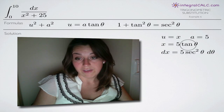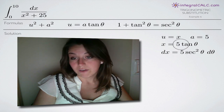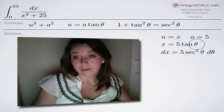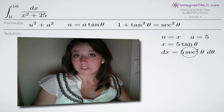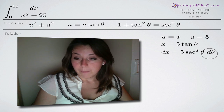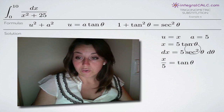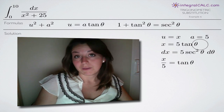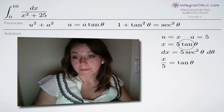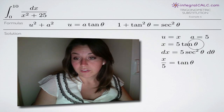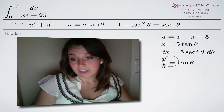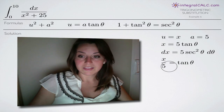Now we need to do several things with this. The first is to take the derivative to find dx. When we take the derivative, the 5 stays there, and the derivative of tangent of theta is secant squared of theta, so we get dx equals 5 secant squared of theta d theta. We also need to solve for tangent of theta — whether it's sine, secant, or tangent depends on the substitution type. All we do is divide both sides by 5, giving us tangent of theta equals x over 5.